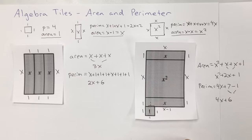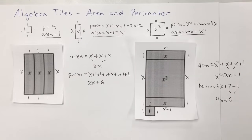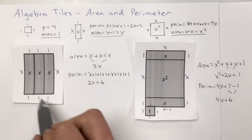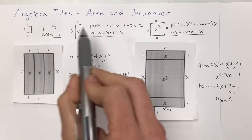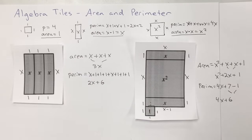For algebra tile problems, the key steps are: for area, just add together the pieces — the values are usually written on them — then combine like terms. For perimeter, think about the value of each side, then combine the pieces together. Remember you can't combine x's and ones — keep those separate. And that's area and perimeter for algebra tiles.